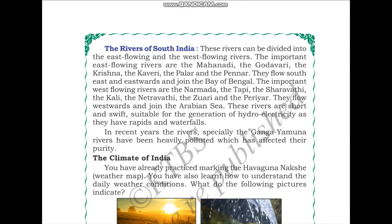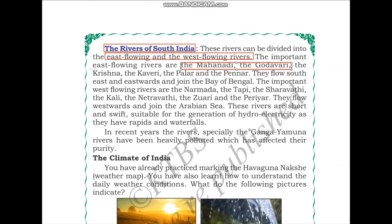Next, let us talk about the rivers of South India. These rivers can be divided into the east-flowing and west-flowing rivers based on whether they drain into the Bay of Bengal or the Arabian Sea. The important east-flowing rivers are the Mahanadi, Godavari, Krishna, Kaveri, Pallar, and Pennar.